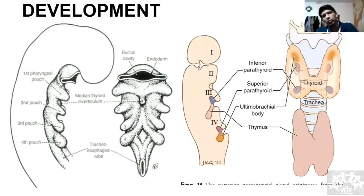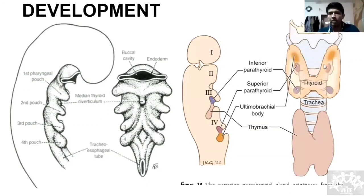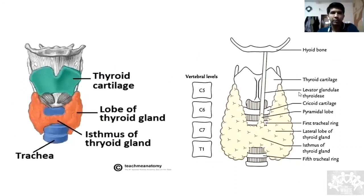The medial analogue contains your future follicular cells. From the fourth pouch, sometimes called the ultimobranchial body, you get neuroectodermal cells or crest cells. They form the parafollicular or C cells, most commonly seen in the upper part of the thyroid. These are your lateral analogues — medial and lateral analogues fuse in the neck, normally in the fifth week of gestation.